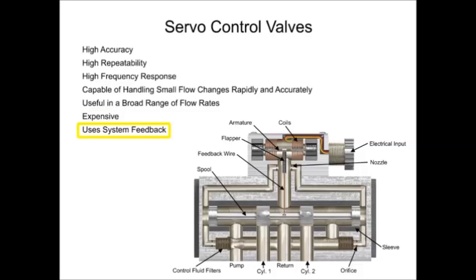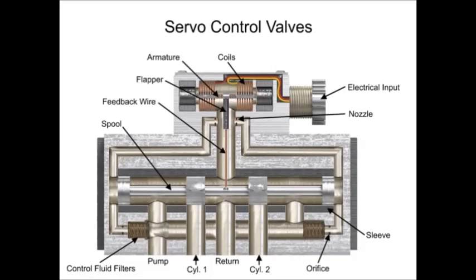The main difference between proportional and servo valve circuit design is that servo systems have a method of feedback that assures that the actuator is doing what the controller tells it to do. Most industrial applications use feedback from electronic linear, rotary, or force transducers. A transducer is a device that produces an electrical signal in direct relation to a position, force, or speed. These devices feed a precise position or speed indication back to an electronic controller via a feedback wire, which in turn adjusts the valve.